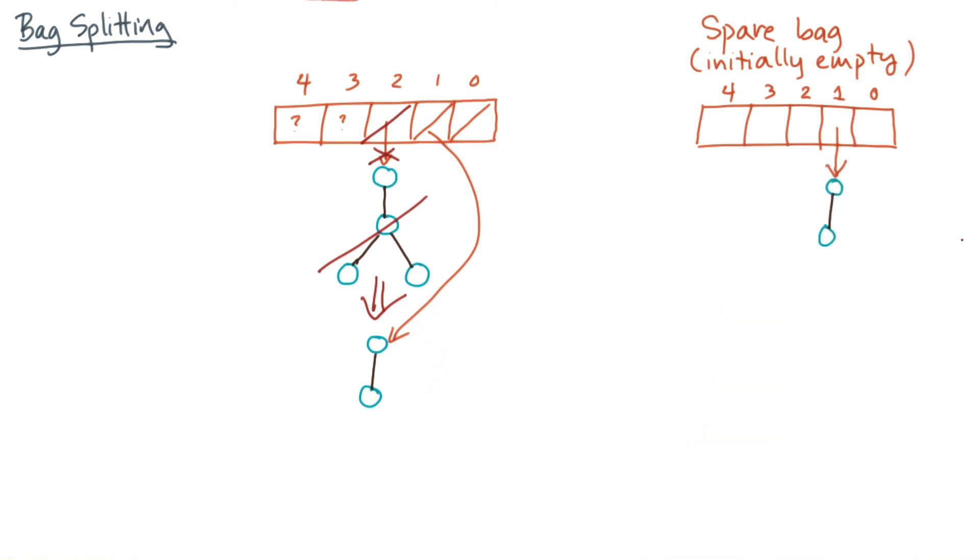In the worst case, we might have to move or touch every pennant. But remember that each pennant split only takes constant time. Therefore, the whole splitting should be possible in just log n steps. That's log n splits, constant time per split, log n overall cost.